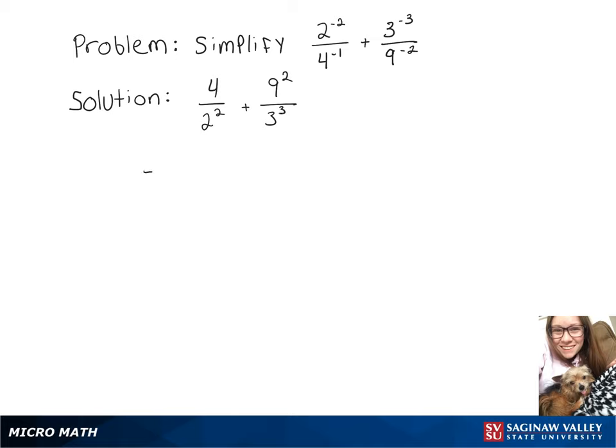Simplifying from there, we have 4 over 4 plus 81 over 27, which is just 1 plus 3, which equals 4.